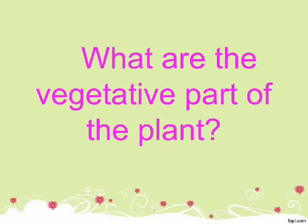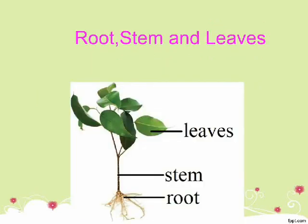What are the vegetative parts of the plant? The vegetative parts of the plant are root, stem, and leaves.